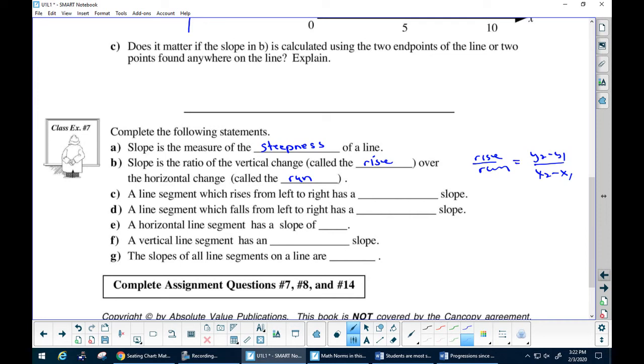Now, a segment that rises from left to right, so when I'm rising from left to right it's like that, would have what kind of slope? A positive slope. Now, a line segment that falls from left to right is my negative slope.